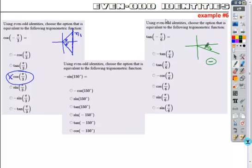What I want to do is find what the tangent of negative pi over 6 is equivalent to, and the angle I'm comparing it to is positive pi over 6. When I look at that, are these going to have the same tangents or opposite tangents?